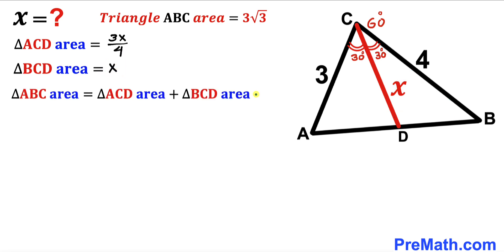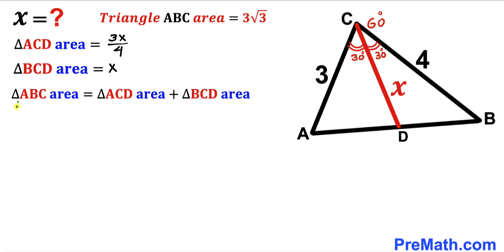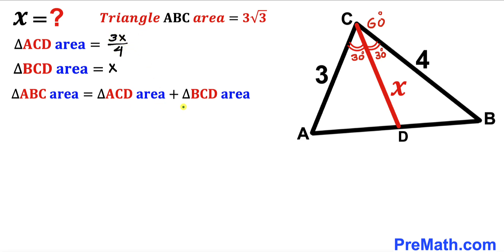In the final step, we return to the equation: the area of triangle ABC equals the area of triangle ACD plus the area of triangle BCD. The area of triangle ABC is 3 times square root of 3, the area of triangle ACD is 3X divided by 4, and the area of triangle BCD is X.